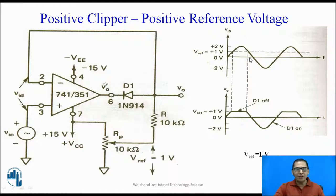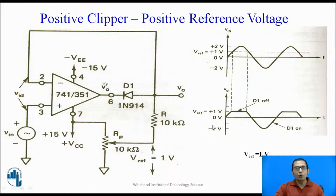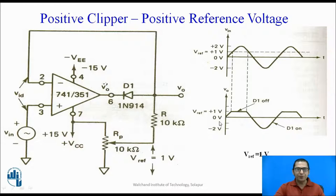When the input voltage again falls below one volt, the output of the op-amp becomes negative, the diode starts conducting, and the output follows the input again. So looking at the output waveform: as long as the input is less than one volt, output equals input; when input goes above one volt, output remains at one volt. All the portion towards the positive above the reference voltage is chopped off — that is why this circuit is called a positive clipper.